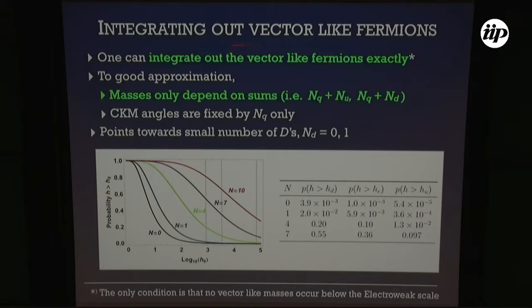Rather than the perturbative approximation, one can integrate out the vector-like fermions exactly. The only condition is that none of the true vector-like masses fall below the electroweak scale. To a very good approximation, the hierarchy in the up-sector depends only on the sum of the number of Q-type and U-type vector-like fields, and in the down-sector on the number of Q-type and D-type fields.